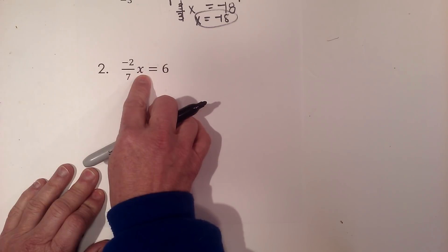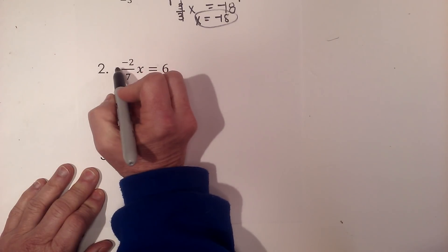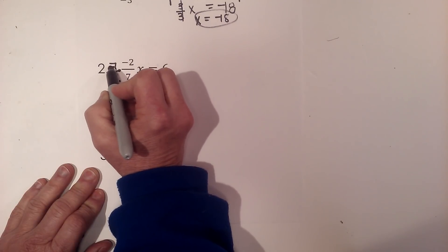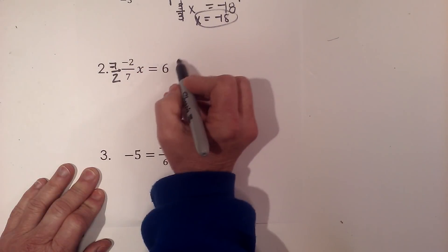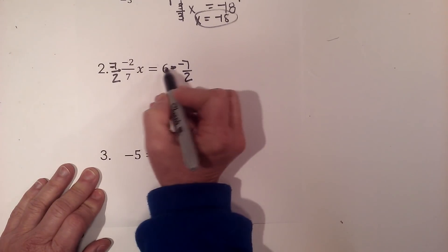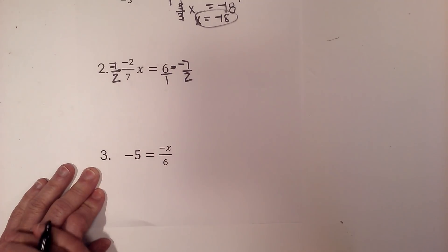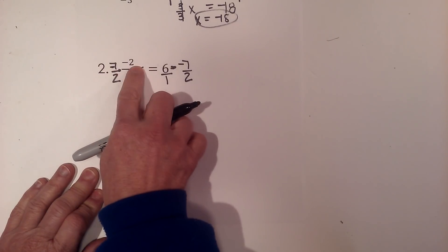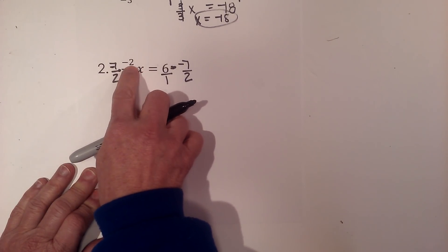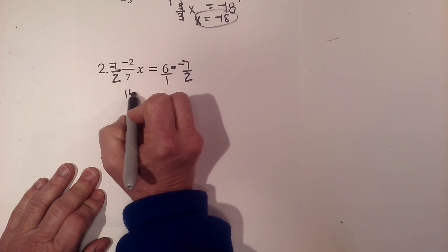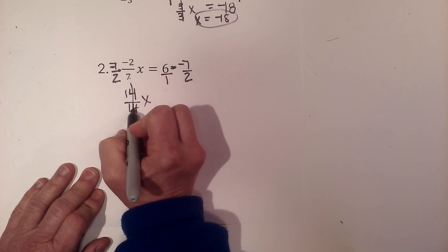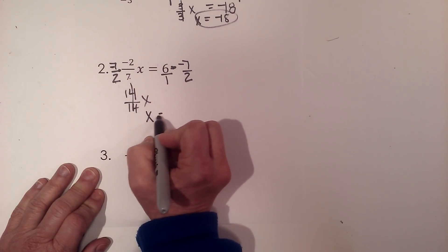I need to clear my fraction in front of x, so I'm going to multiply by the reciprocal. I'll multiply both sides by seven over two. Since this is negative, I need to multiply by a negative to create a positive. I'm going to multiply this side by negative seven over two. Now I need to write a one under my six so I have a fraction. Let's go back to the left side and multiply those together. Negative seven times negative two is fourteen, two times seven is fourteen x. That all cancels out to just one x or just x.